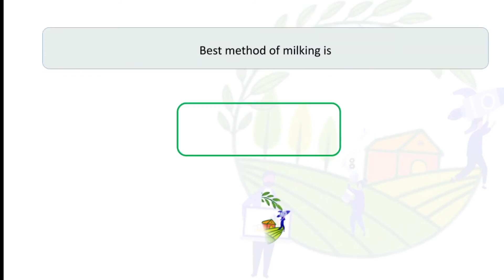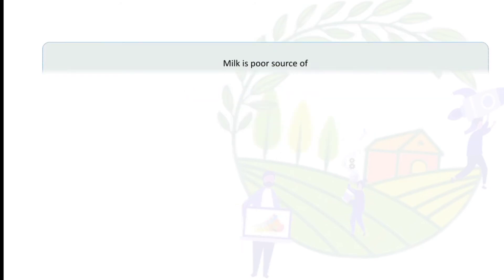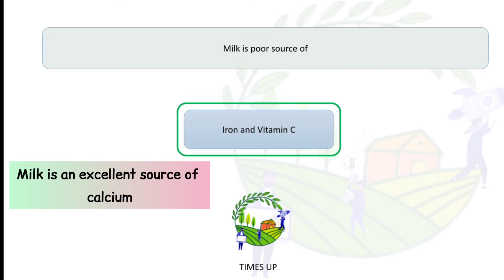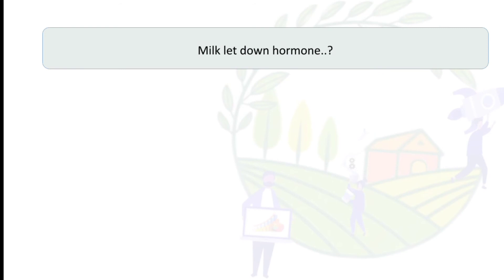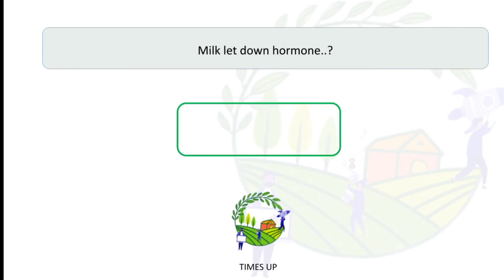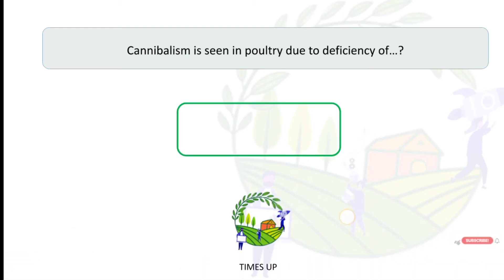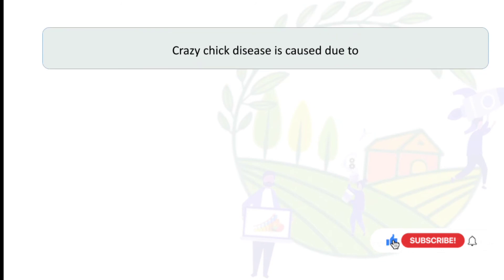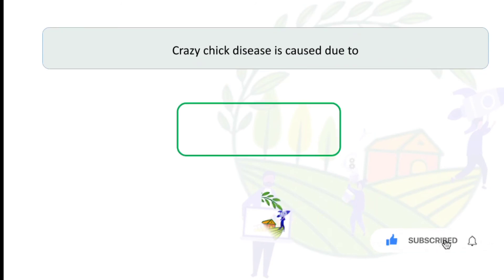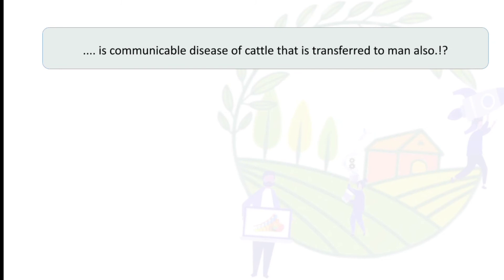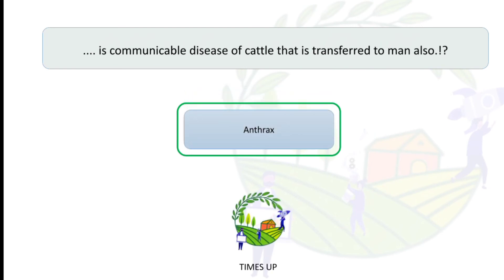Fat globules in milk are in the form of emulsion. The best method of milking is the full hand method. Milk is a poor source of iron and vitamin C. The milk let-down hormone is oxytocin. Cannibalism is seen in poultry due to deficiency of NaCl (sodium chloride).